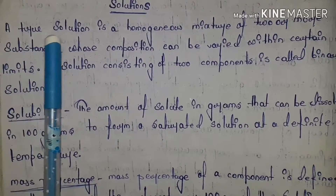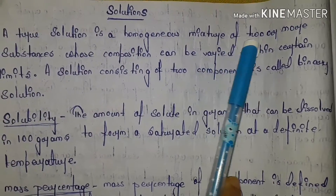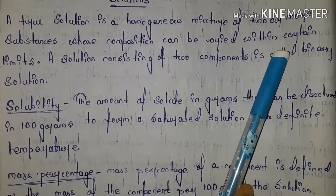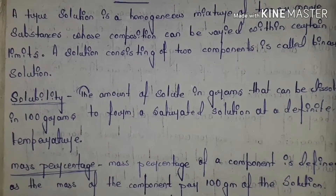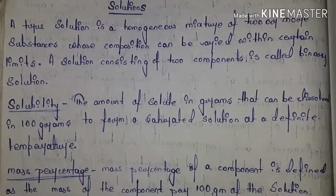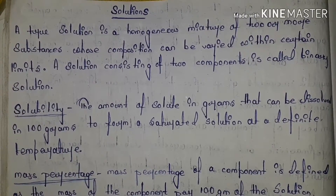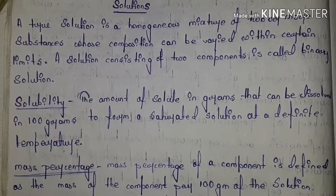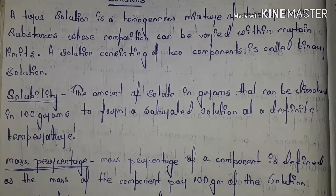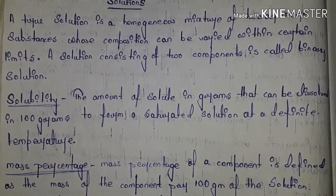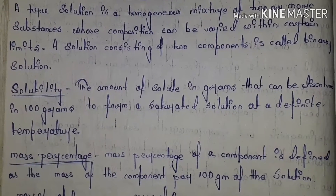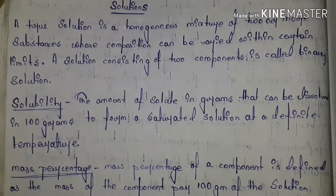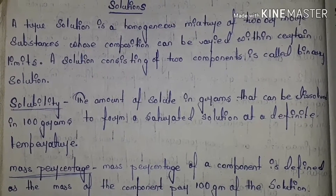A true solution is a homogeneous mixture of two or more substances whose composition can be varied within certain limits — which are not physically different from each other in appearance.